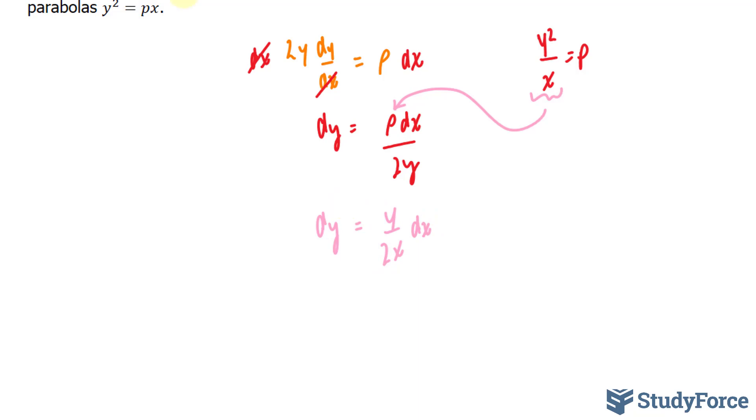This gives me dy = y/2x dx. And if you're confused by that, I'll show my work on the side. I have y² over x dx over this part, 2y. Pretend that this 2y has a 1 underneath, so we flip this and we multiply it. We have y² dx/x times 1/2y. One of these y's cancels out with this one, leaving you with y dx/2x as shown.